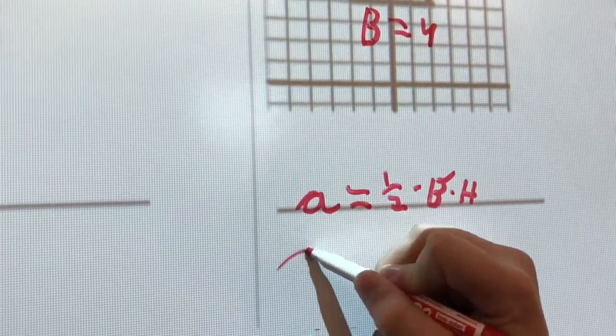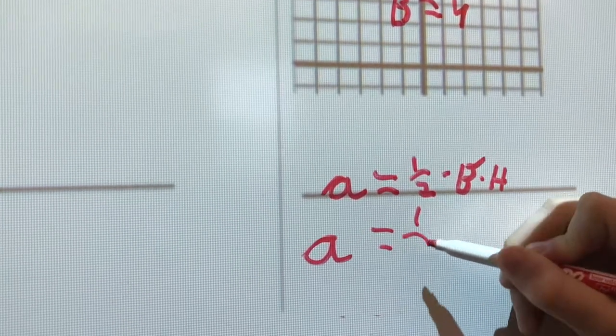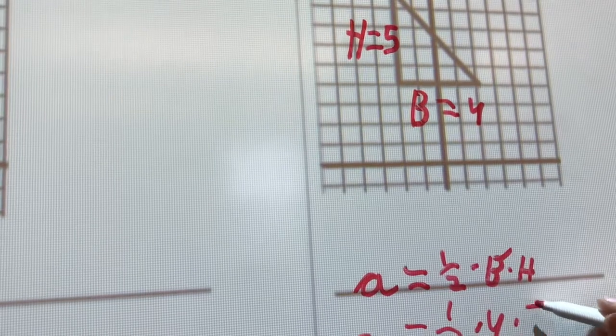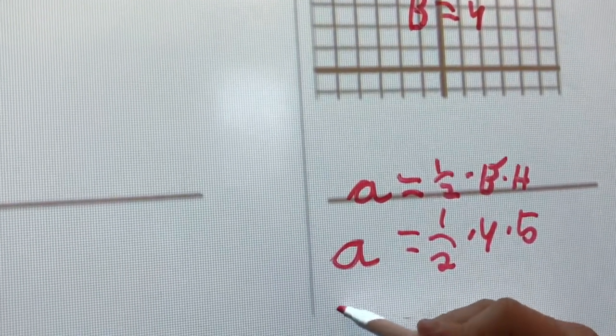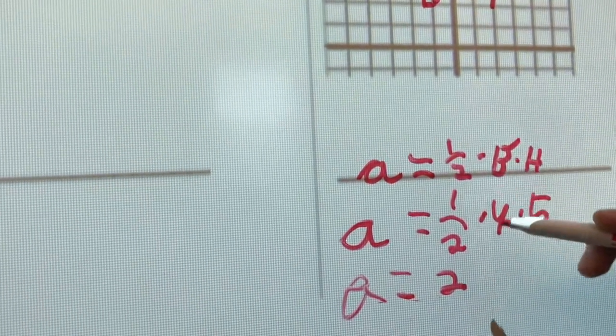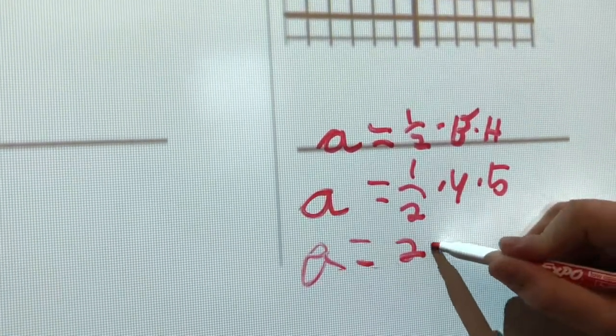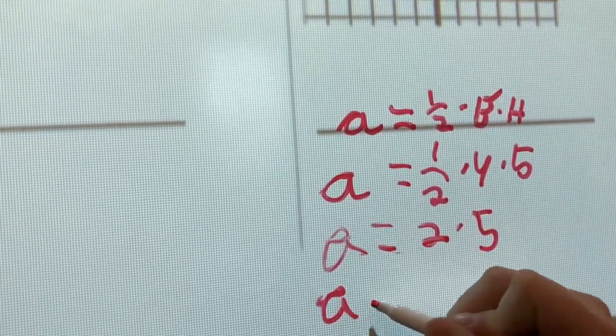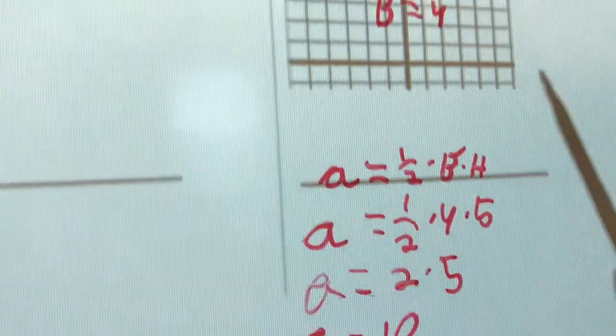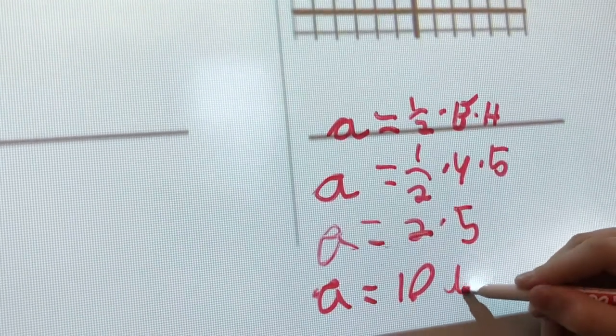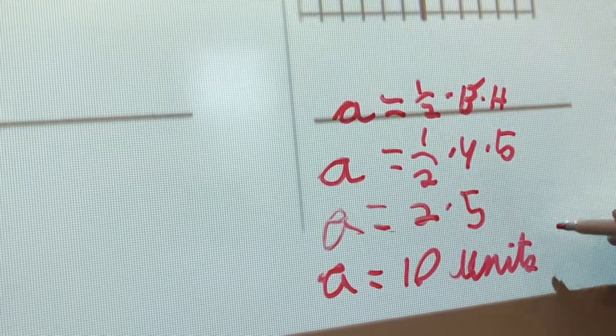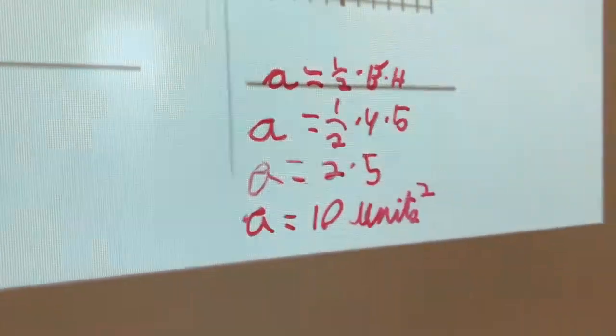And you would start off by putting A equals 1/2 times 4 times 5. And then A equals 2, because I multiplied the 1/2 times the 4. A equals 10. And because it doesn't say centimeters or inches, it would be units. And because it's area, it's units squared.